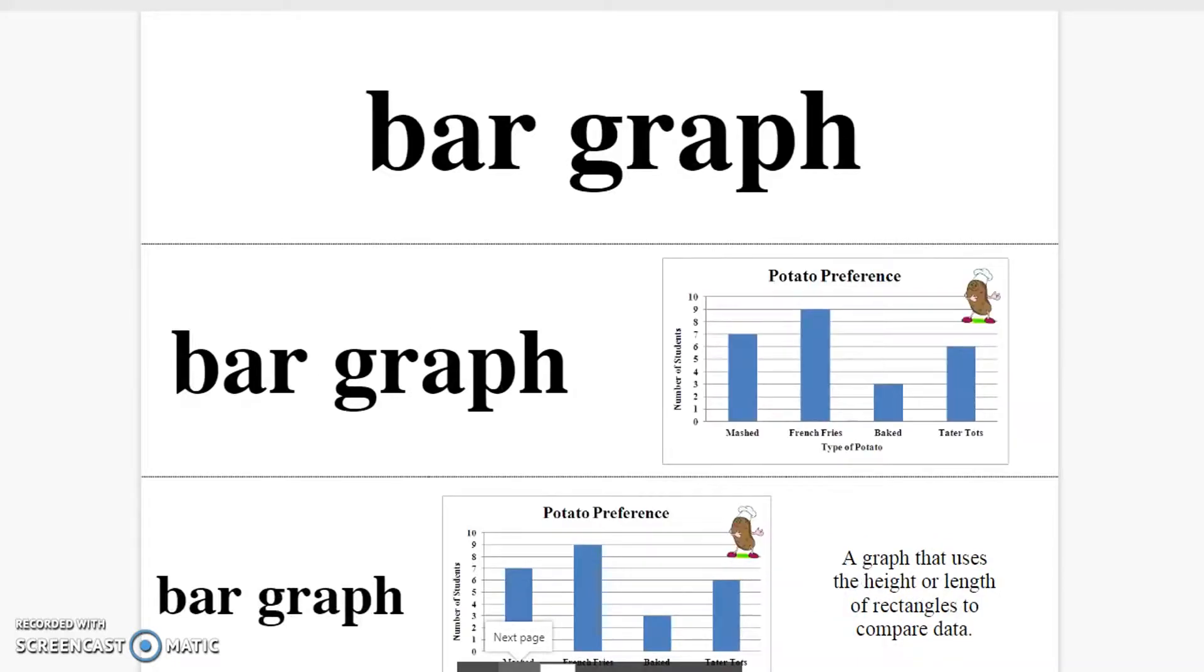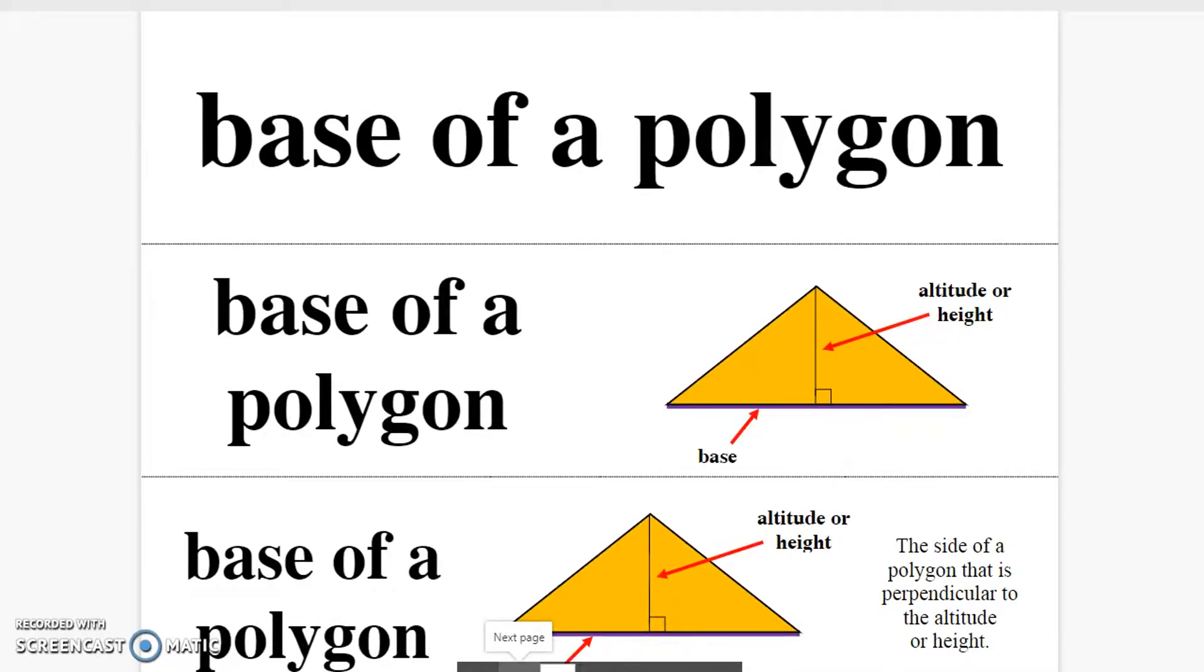Bar graph. A graph that uses the height or length of rectangles to compare data. Base of a polygon. The side of a polygon that is perpendicular to the altitude or height.